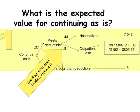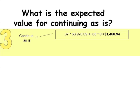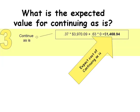In the next step, we move back a node and redo the process, replacing another node with its expected cost. For employees who meet the deductible, the node is replaced by the probability of meeting the deductible and being hospitalized, plus the probability of meeting the deductible and having clinic visits. The net impact is $3,970. Finally, we replace the last node with its expected value. The expected value for continuing as is is now calculated as $1,468.